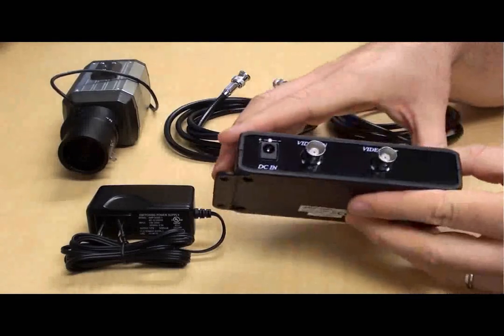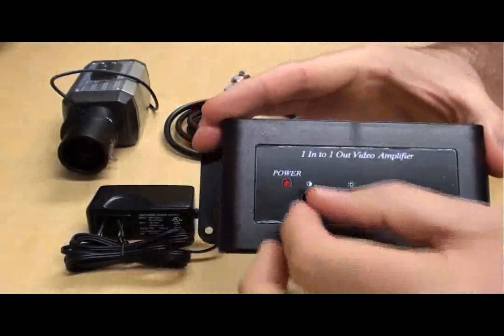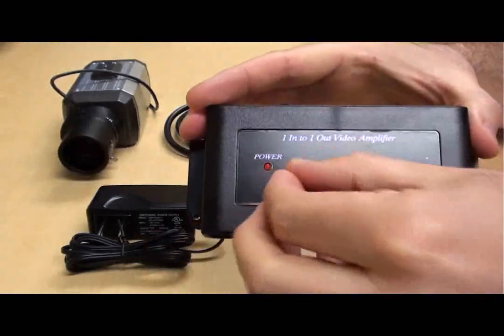Here you can see the BNC video input and output of the amp. On the top there are control knobs to adjust the brightness and sharpness of the video signal.